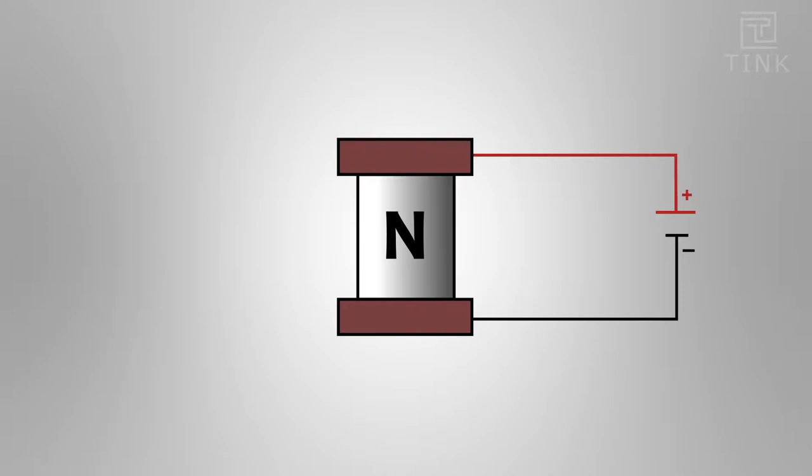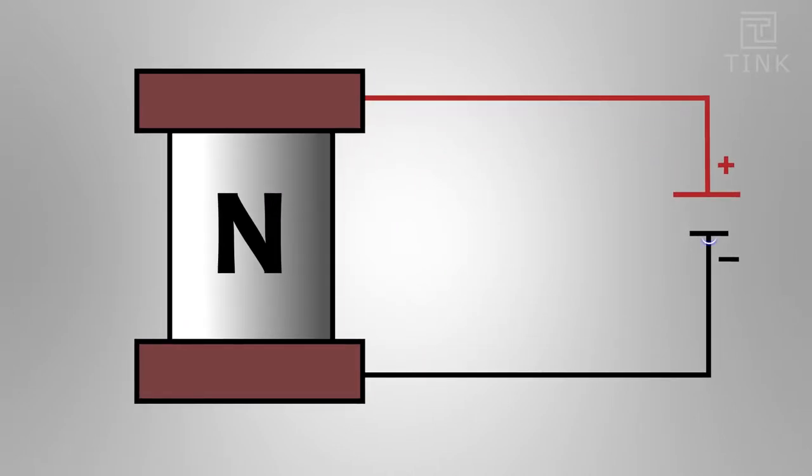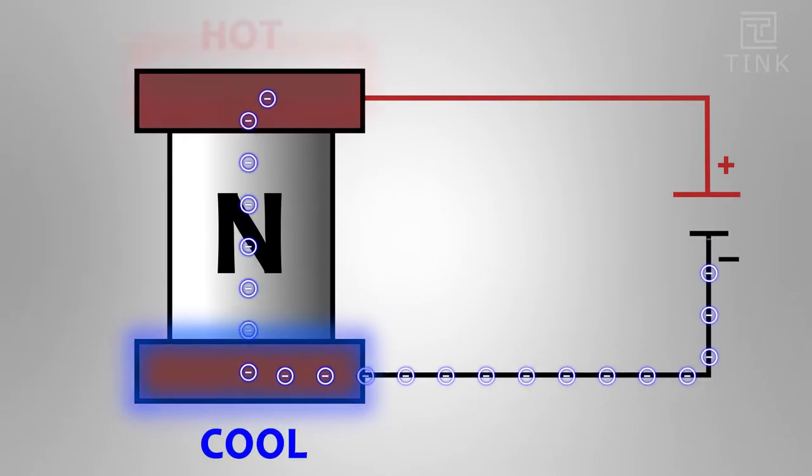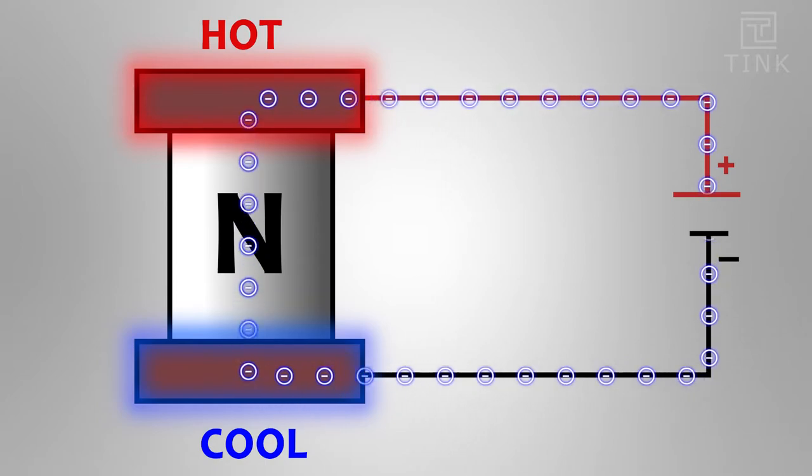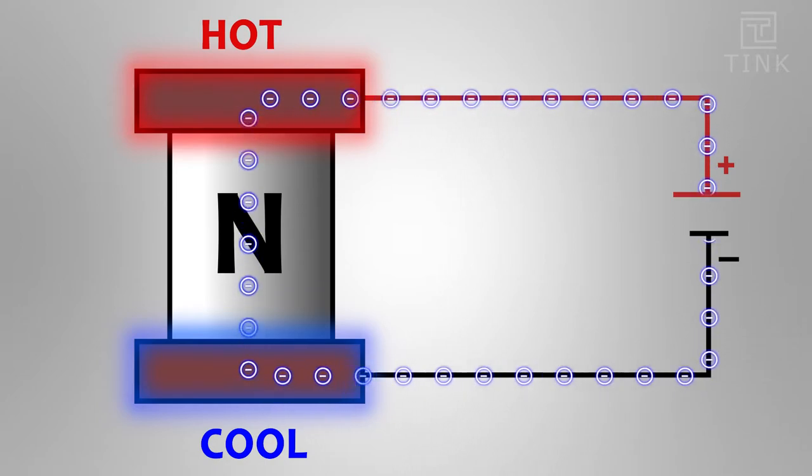Now when I apply voltage electrons start flowing through the wires to pass through the copper plate then through the N type semiconductor. So the electrons will still continue to flow through the N type semiconductor to pass through the other copper conductor to finally discharge at the positive side.